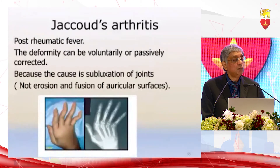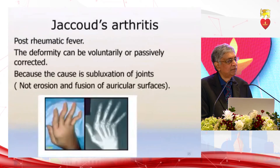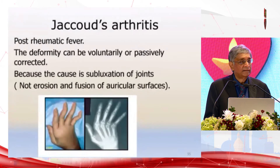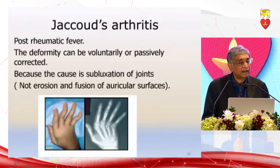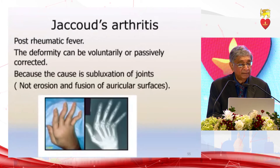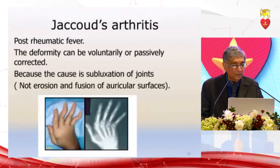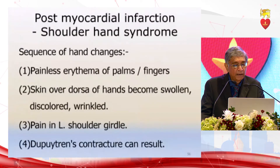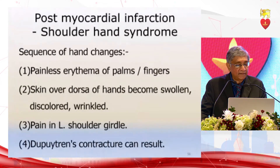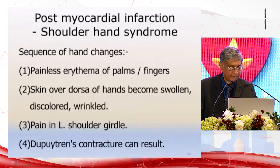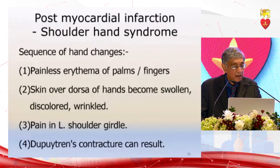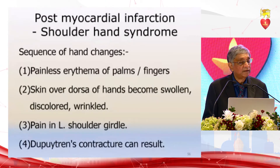Scleroderma is associated with pulmonary fibrosis and pulmonary hypertension, presenting with shiny, tight skin of the digits. Jaccoud's arthritis — not very common now but we used to see a few cases in rheumatic fever — gives a deformity very like rheumatoid arthritis but easily corrected, because there is no erosion or fusion of articular surfaces, no pain, and easily corrected. The post-myocardial infarction syndrome — Dressler's syndrome — especially after cardiac surgery includes the shoulder-hand syndrome, Brissler syndrome, and a sequence of hand changes: painless erythema of the palms and fingers, skin over the dorsum becoming sore, discolored and wrinkled, pain in the shoulder girdle, and Dupuytren's contracture.